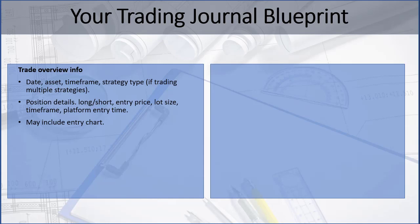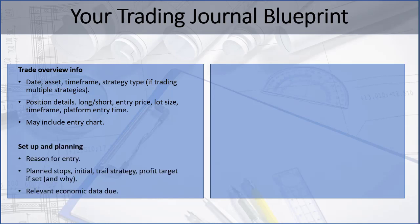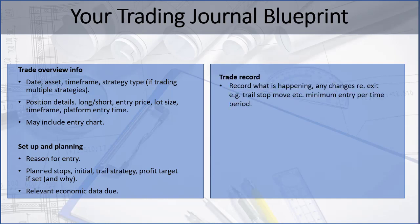You may have some trade overview information which includes the date, the asset, the time frame, the strategy type, position details about whether you're long or short, entry price, lot or contract size, time frame, platform, entry time — and some people may include an entry chart. You may also include the reason for entry and your planned stops: initial, trail, and profit targets if set, and why.